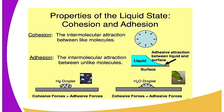We have cohesion and adhesive forces. Cohesion force is a force of attraction between molecules of the same kind. Adhesive force is the intermolecular force of attraction between unlike molecules. For example, the force that causes mercury droplets to hold together is called the cohesion force, and the force that causes mercury to hold with the glass in a thermometer is called the adhesive force.